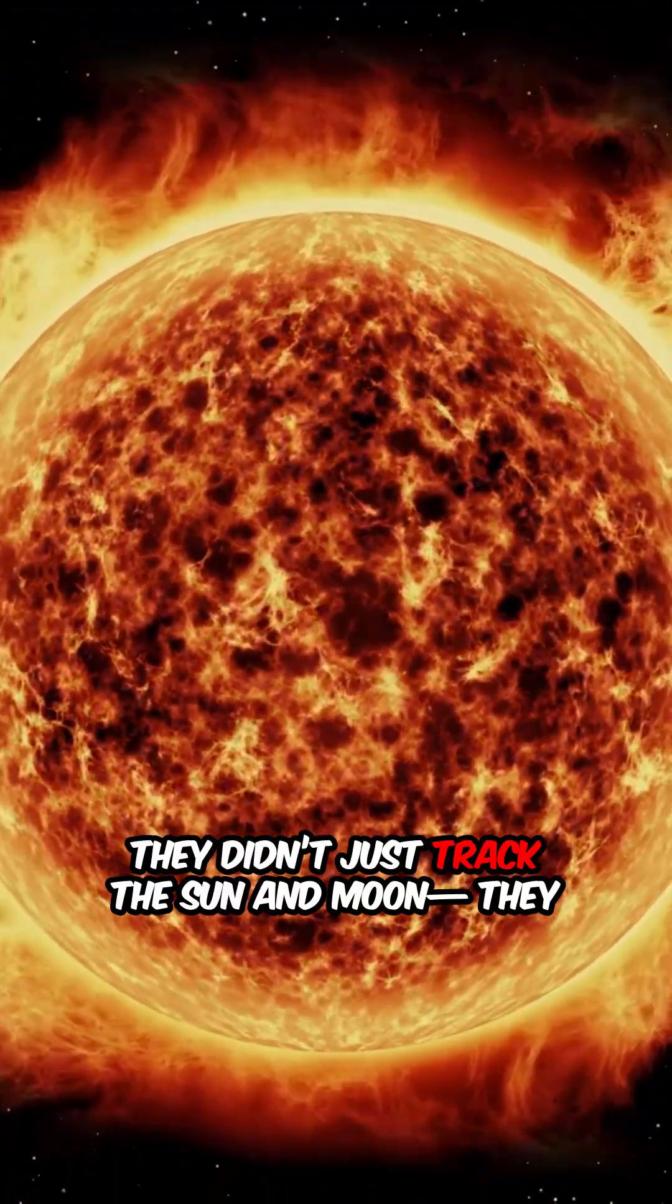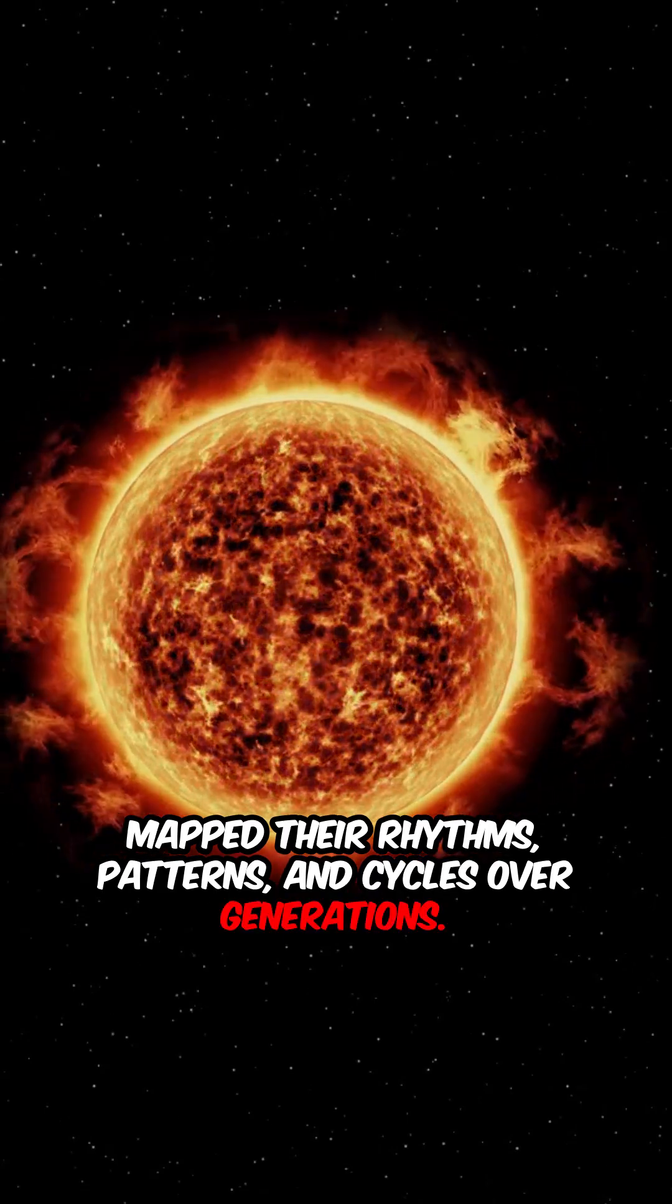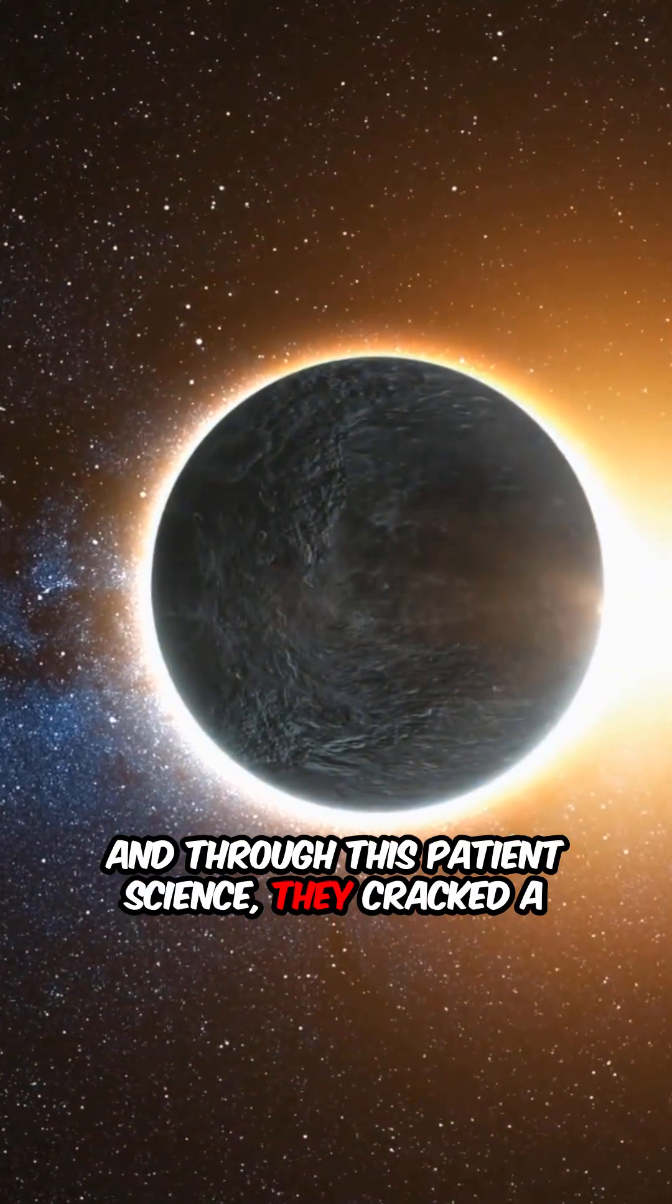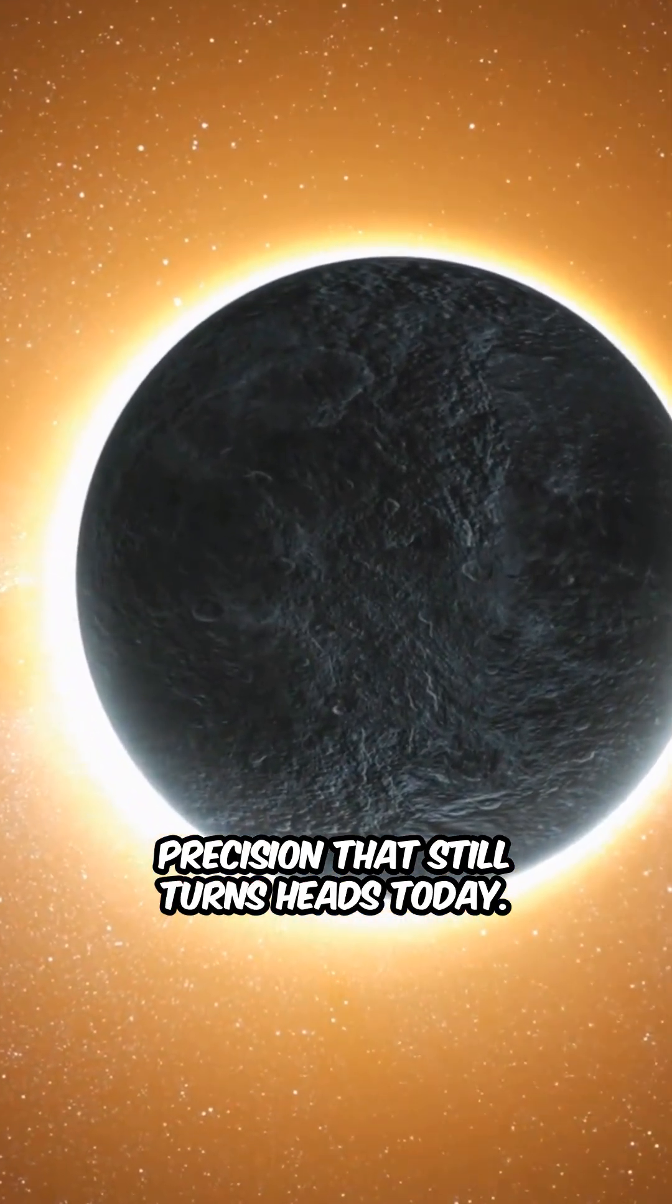They didn't just track the sun and moon. They mapped their rhythms, patterns, and cycles over generations. And through this patient science, they cracked a cosmic formula that let them predict eclipses with precision that still turns heads today.